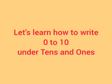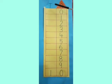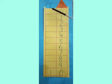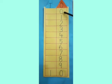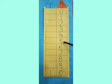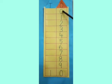Now let's learn how to write 0 to 10 under the tens and ones columns. Here we have a tens and ones column — T for tens, O for ones. Because 0 to 9 are all ones, we write: 0, 1, 2, 3, 4, 5, 6, 7, 8, 9 under the ones column. Now 10 is 1 ten. So we write 1 under the tens column and 0 under the ones column, like this.